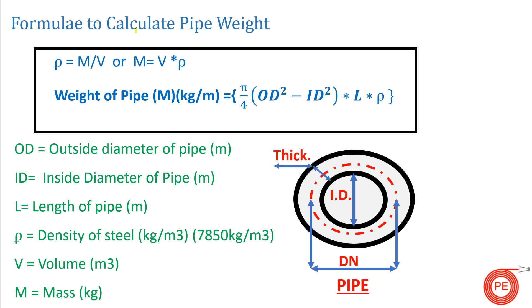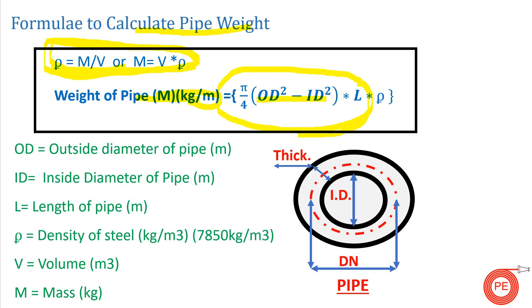The formula to calculate pipe weight uses the basic principle: density equals mass divided by volume. The weight of the pipe in kg per meter is given by (π/4) × (OD² − ID²) × L × ρ. The term (π/4) × (OD² − ID²) × L represents the volume of the pipe, treating the pipe as a hollow cylinder where L is the length.